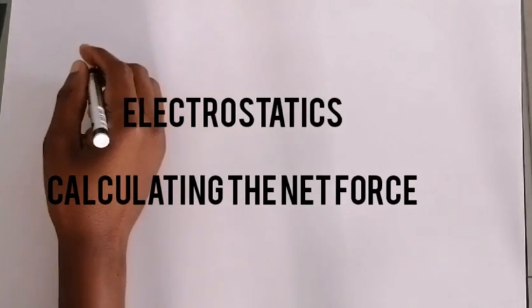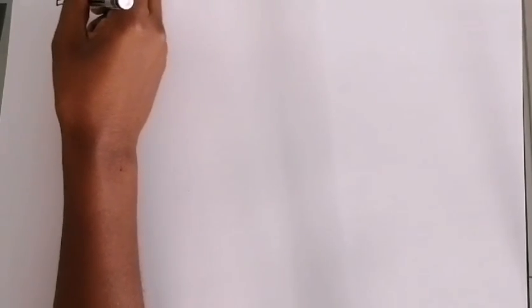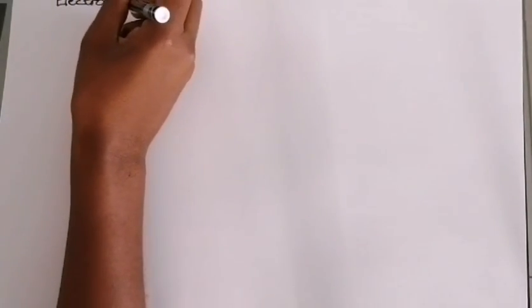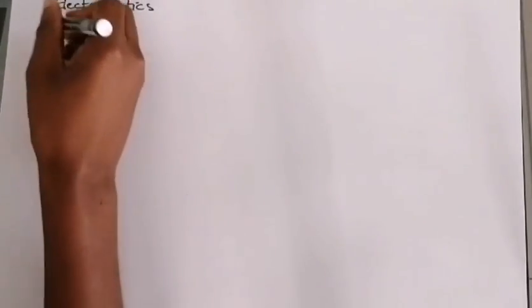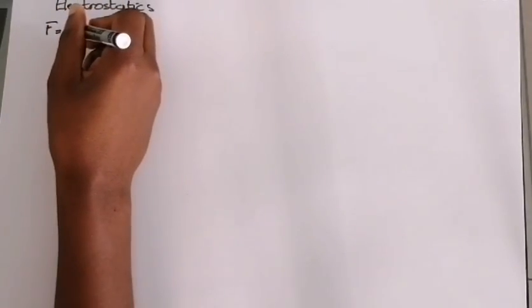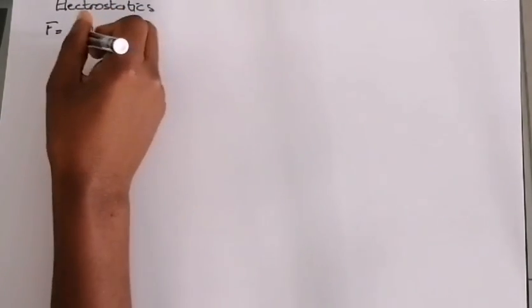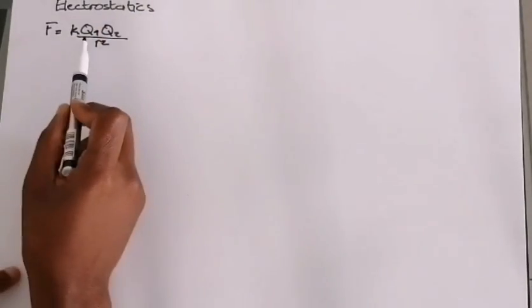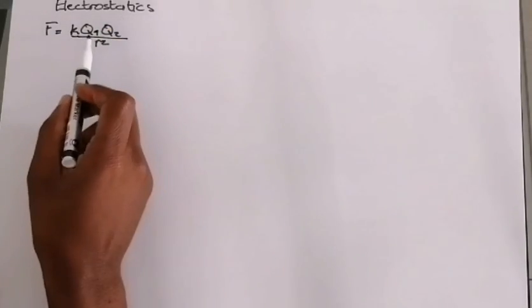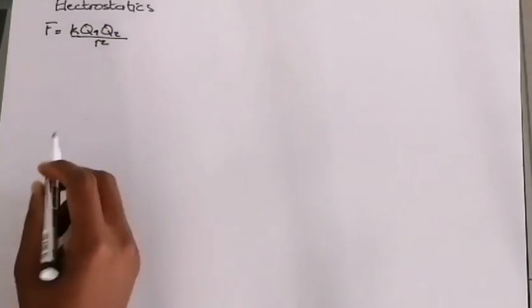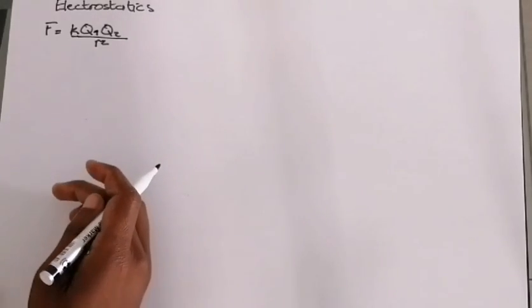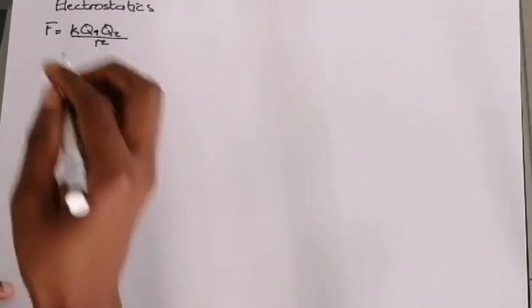In our first lesson, we start with electrostatics. The first thing we know from electrostatics is Coulomb's Law, which simply states that the force between two point charges, Q1 and Q2, is directly proportional to the magnitude of their charges and inversely proportional to the square of their distance apart.